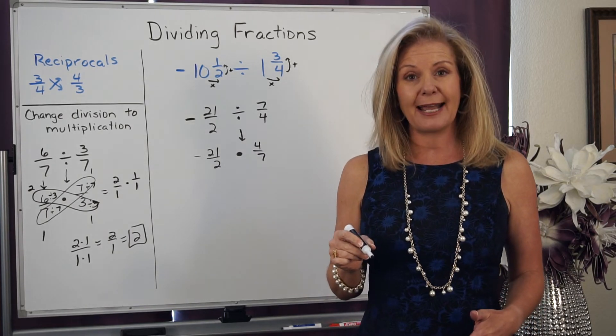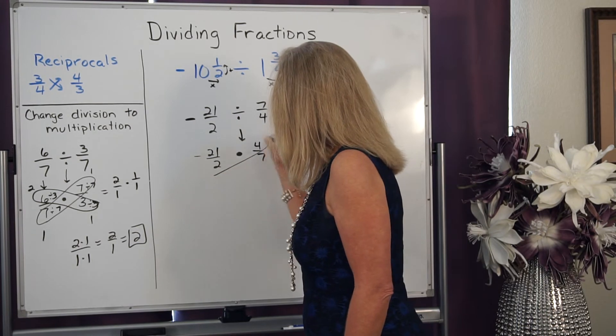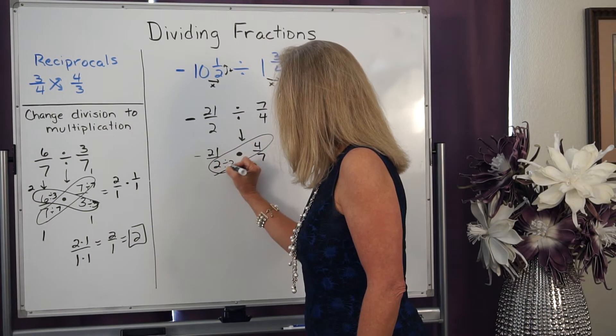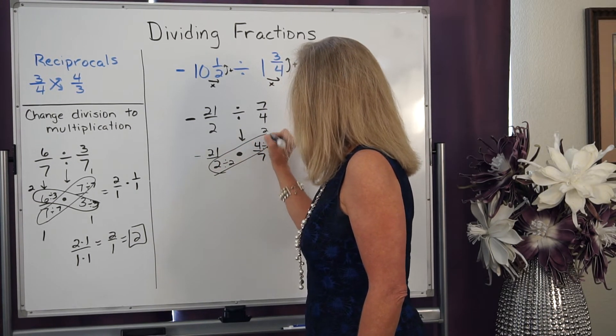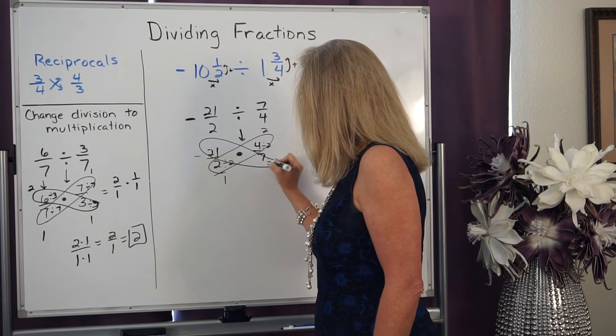Now I'm going to look at my diagonals and see if I can reduce up front. Well, I see here I could divide both by 2. I see here I could divide both of them by 7.